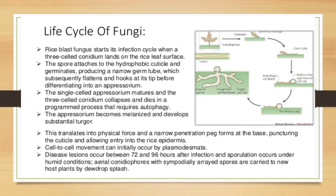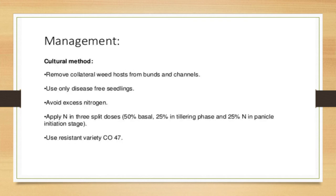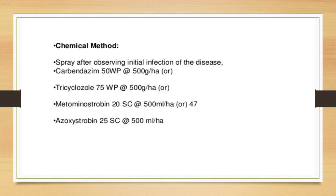Sporulation occurs under humid conditions and aerial conidia are carried to new host plants by dewdrop splash. Management — cultural methods: remove collateral weed hosts from bunds and channels, use only disease-free seeds, avoid excess nitrogen, apply nitrogen in three split doses (50% basal, 25% at tillering, 25% at panicle initiation), and use resistant varieties such as CO 47. Chemical method: spray carbendazim 50% wettable powder at 500 grams per hectare after observing initial infection.